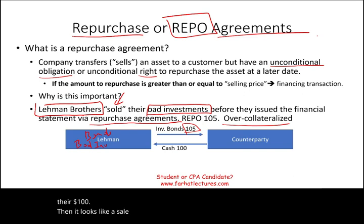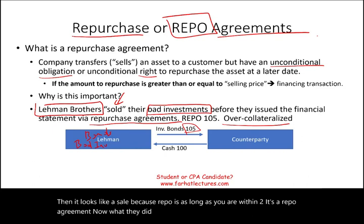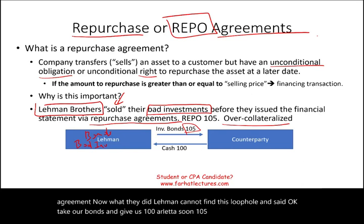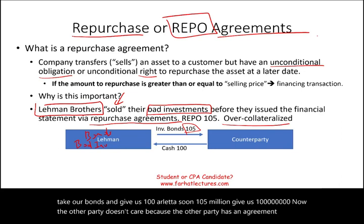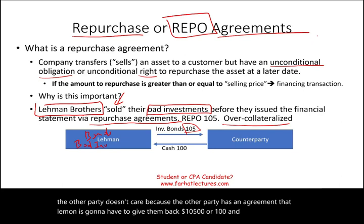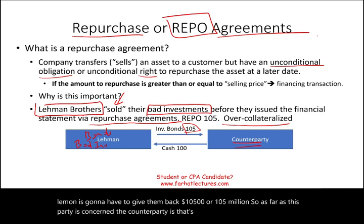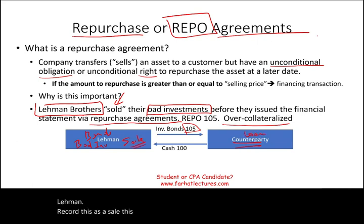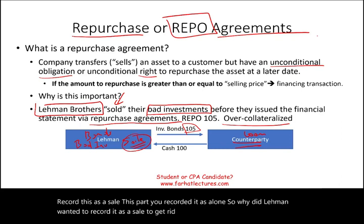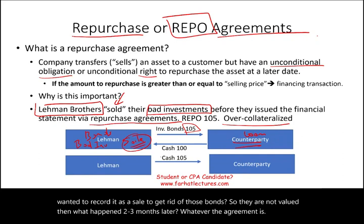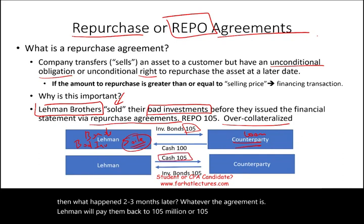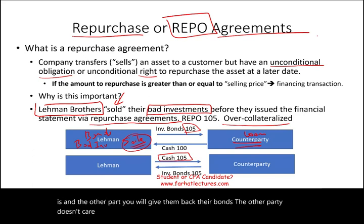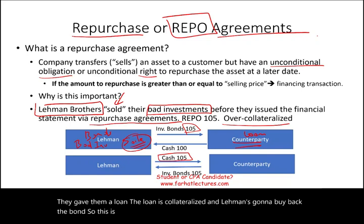Lehman found this loophole and said: take our bonds and give us $100 million — the bonds being worth $105 million. The other party didn't care, because they had an agreement that Lehman would give them back $105 million. As far as the counterparty was concerned, it was a loan. However, Lehman recorded this as a sale. Two or three months later, Lehman paid back the $105 million and the other party returned the bonds. The counterparty didn't care how Lehman accounted for it — for them, it was a collateralized loan. This is why it's important: companies will try to disguise repo agreements as sales agreements.